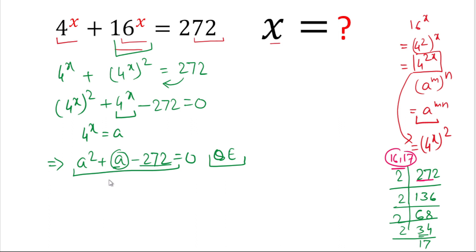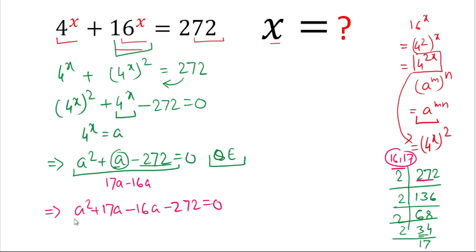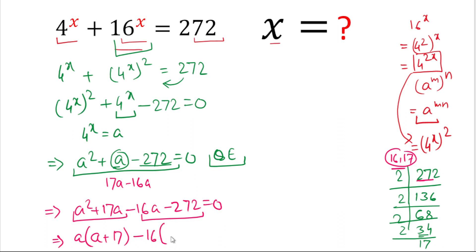We can write plus 1 as 17a minus 16a. So our new equation becomes a squared plus 17a minus 16a minus 272 equals 0. Taking a common from the first two terms and minus 16 common from the last two terms, we get a times (a plus 17) minus 16 times (a plus 17) equals 0.